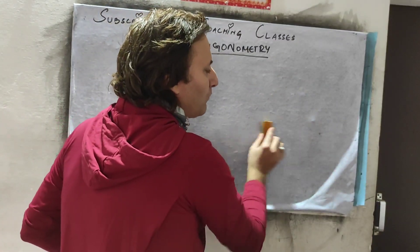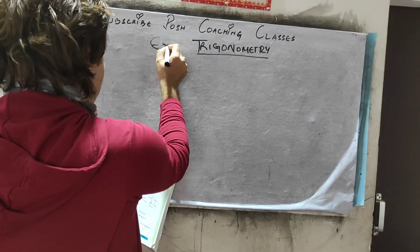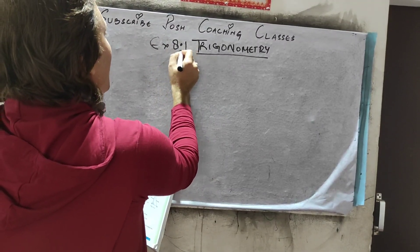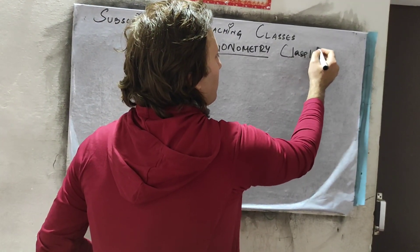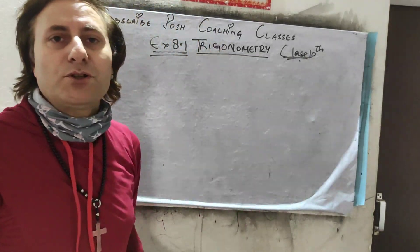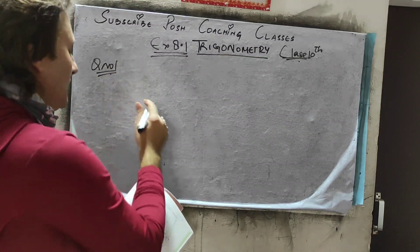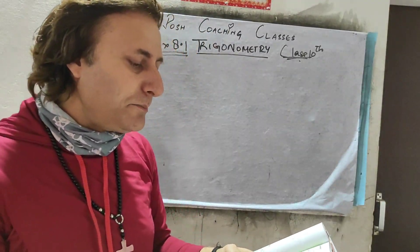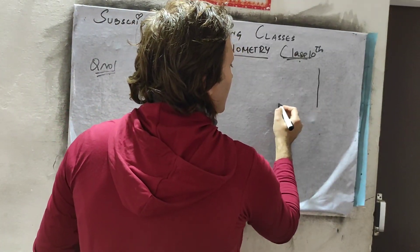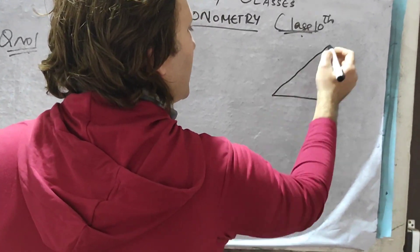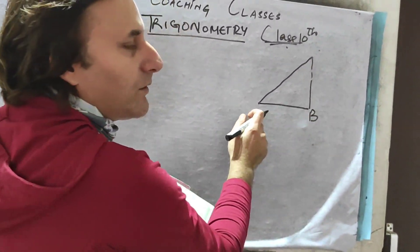Now we will go further and move to the first exercise, which is Exercise 8.1, question 1. It says: in triangle ABC, right angle at B. So we will make a triangle ABC with the right angle at B — you can place vertex A either here or here, it's your choice.